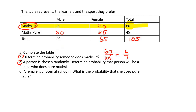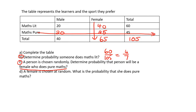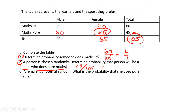Going on to question C: a person is chosen randomly — determine the probability that the person will be a female who does pure maths. Go down to female and across to pure maths, and where they intersect that's what we're looking at — all the females who do pure maths, which is 25. So the probability is 25 out of 105, which simplifies to 5 out of 21.